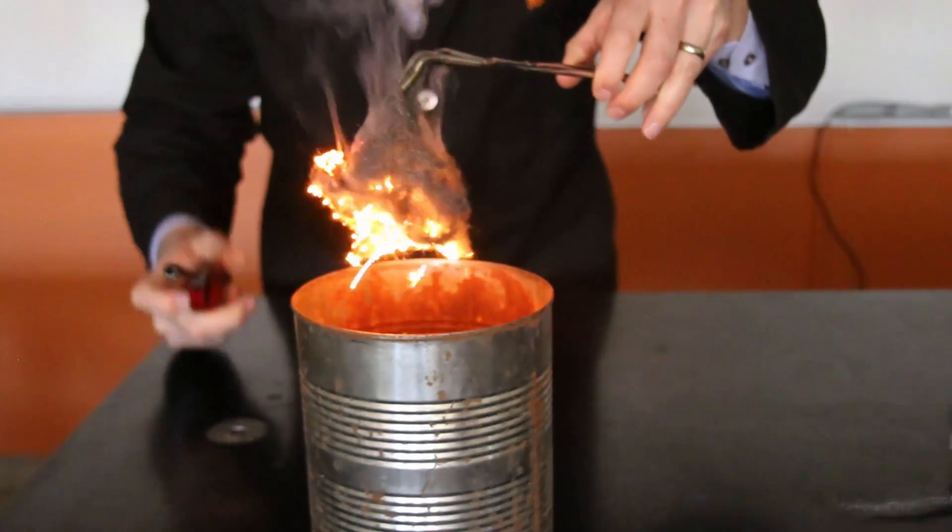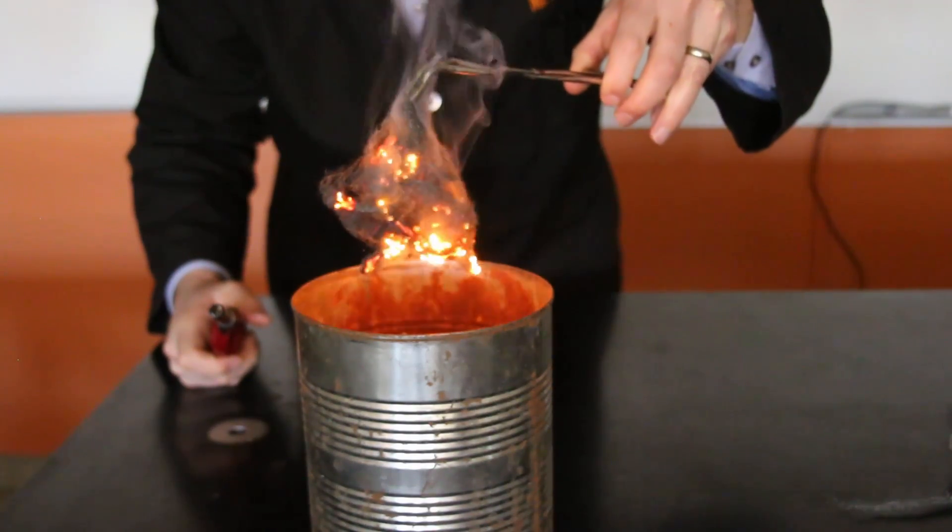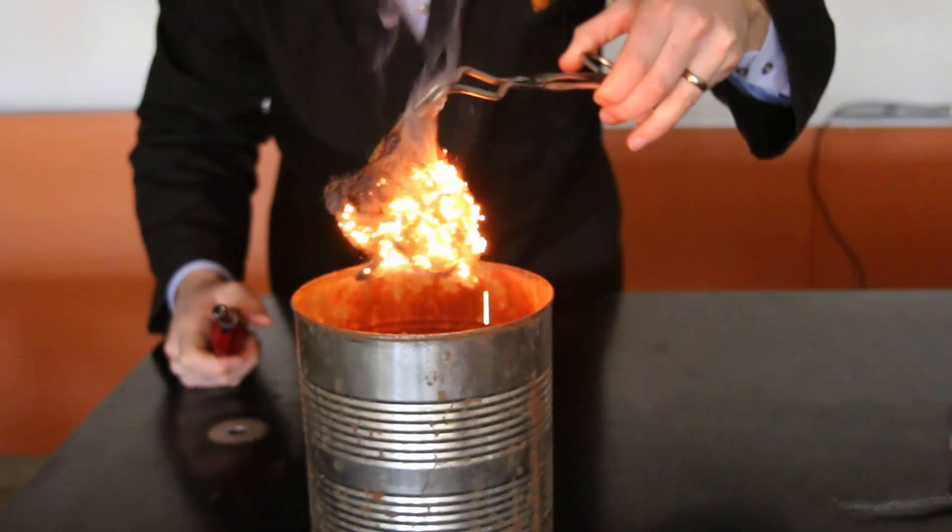We can speed the rust up with a little bit of flame. Now oxygen is combining with the iron making iron oxide or making rust.